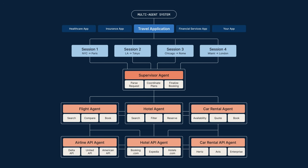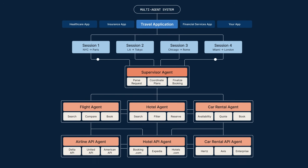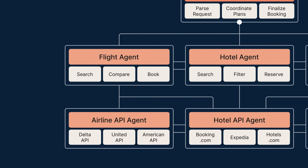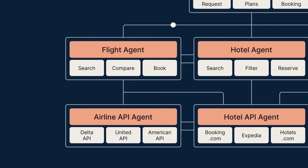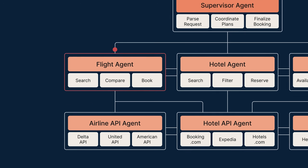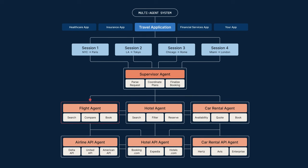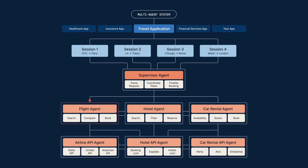Here's an example. A user asks for a simple flight booking. But what if one of your agents, like the flight agent, encounters an unforeseen issue?